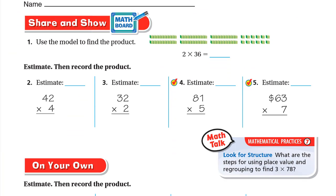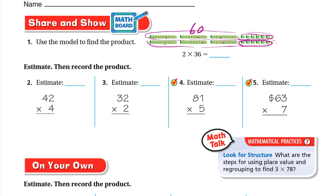Share and show: use the model to find 2 × 36. In the model, 36 is shown twice: the tens give 10, 20, 30, 40, 50, 60, so 60, and the ones give 6 + 6 = 12. So 60 + 12 = 72. Let's verify using regrouping: 2 × 6 = 12, write down 2 and carry 1 up. Don't add it yet — multiply 3 × 2 = 6, plus the carried 1 = 7. Answer: 72.